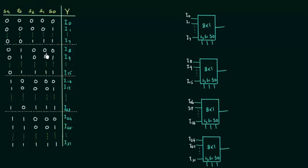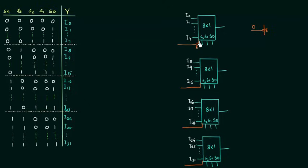Now the important part comes: the role of enable. Each MUX will have an enable input. Remember, this enable is not active low. In some books you will find enable with a bubble, which represents active low enable — meaning the circuit is operational when the input is low. But in our case the enable is not active low, so the circuit is not operational when enable is low, and it is operational when enable is high. Don't confuse yourself with the active low signal, which is always represented with a bubble.